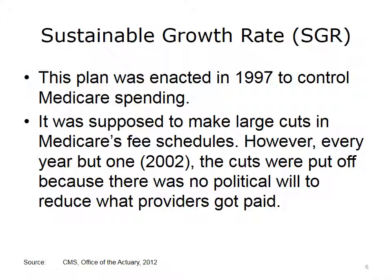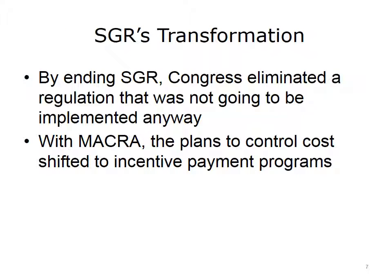Many organizations that represented physicians, hospitals, and other health care providers heavily lobbied Congress to not implement these cuts. This continuous lobbying resulted in SGR cuts, with the exception of one year, never being implemented. This acrimonious atmosphere resulted in the inability to make the kind of radical reductions required by the SGR formula. By ending SGR, Congress eliminated a regulation that wasn't being implemented.